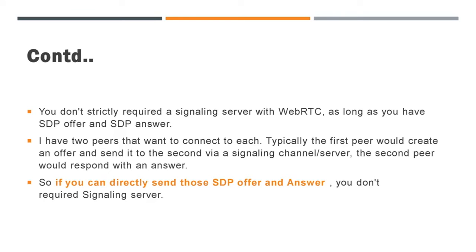For example, if two peers want to connect to each other, typically the first peer would create an offer and send it to the second user through a signaling server. The second peer would respond with an answer. Basically, if you can directly send those SDP offer and answer, then you don't require a signaling server.